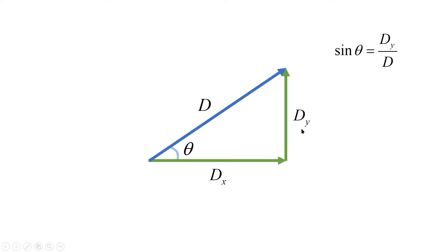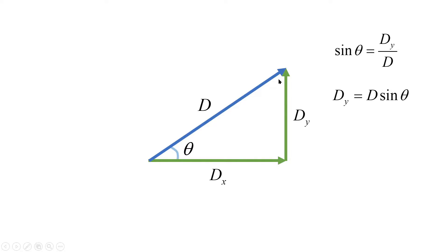D, DX and DY — these three form a right angle triangle, so we can use trigonometry to calculate DX and DY. Sine theta is opposite over hypotenuse, so it is DY over D. Then we can get DY equal to D sine theta.